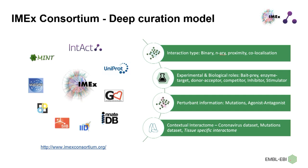We have defined roles at the experimental level and at the biological level, ranging from bait, prey, enzyme, substrate, donor, acceptor, competitors, inhibitors, stimulators, and others. We also capture mutation information if it is available and has an impact on the interaction outcome. The agonist and antagonist are something that do not directly participate within the experiment, but they are available in the experimental data and still have an influence on the interaction outcome — things like hypoxia, UV radiation, any small molecule, or any protein within the experimental setup that has a notable influence on the interaction data.